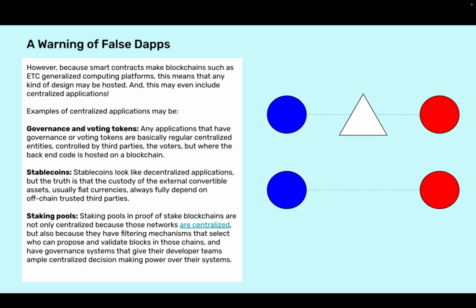Stablecoins look like decentralized applications, but the truth is that the custody of the external convertible assets — usually fiat currencies — always fully depends on off-chain trusted third parties. Staking pools in proof-of-stake blockchains are not only centralized because those networks are centralized, but also because they have filtering mechanisms that select who can propose and validate blocks in those chains, and have governance systems that give their developer teams ample centralized decision-making power over their systems.